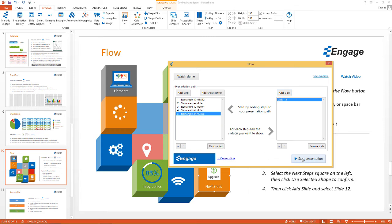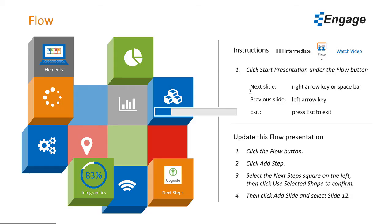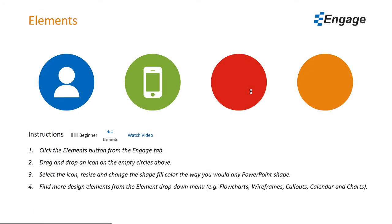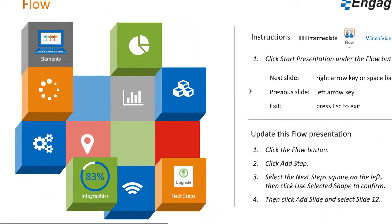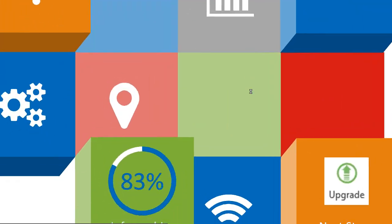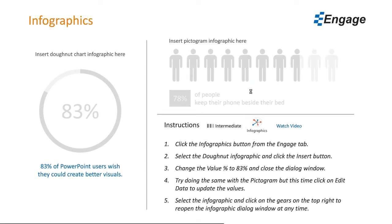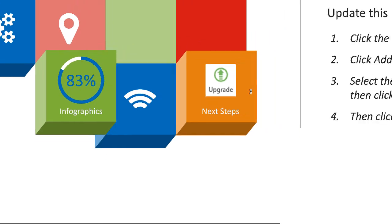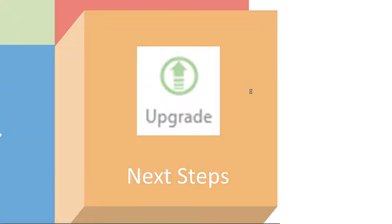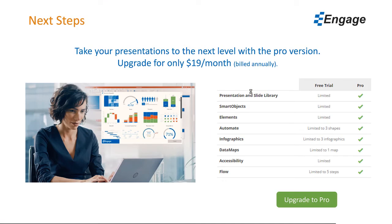Now we have our presentation. I'll click Start Presentation to test the flow. Clicking the right arrow, I zoom into Elements and the Elements slide reveals. Clicking again, I zoom back out to the canvas slide. Clicking again, I zoom into Infographics, the Infographics slide reveals, then I zoom back out to the canvas. The final step is the Next Steps slide — and there we go, we have Next Steps.